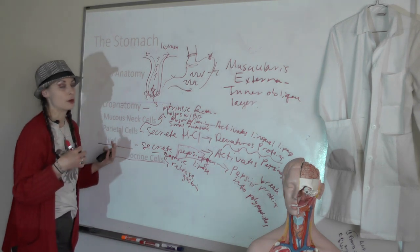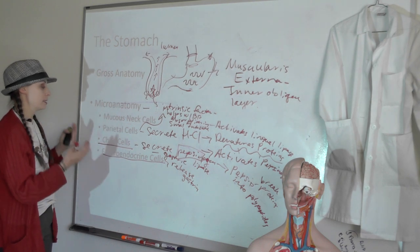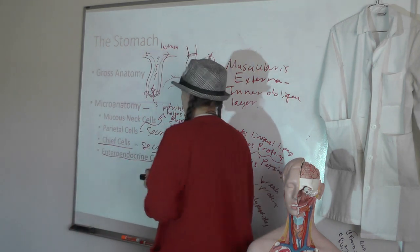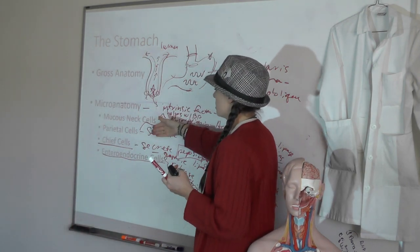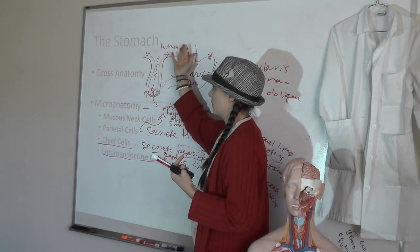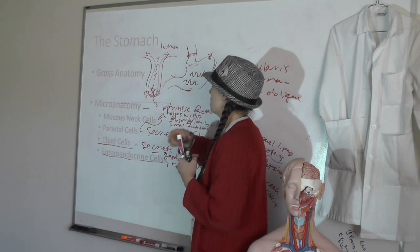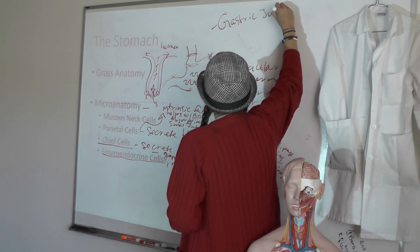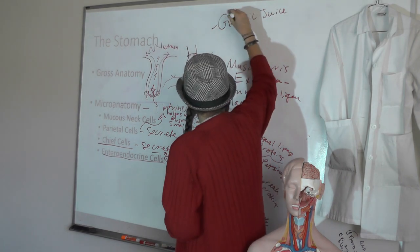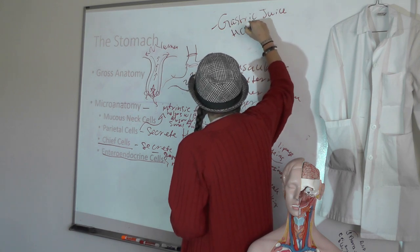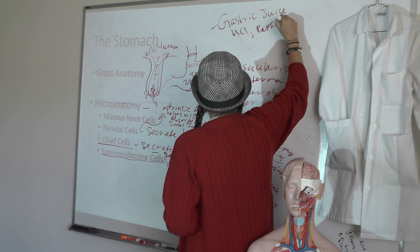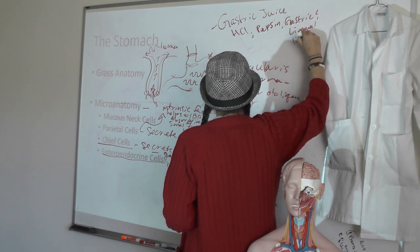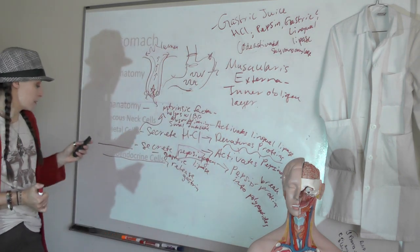Thinking about functional anatomy: here are the cells and here's what they're secreting. The function of cells in the gastric pits is to secrete mucus for the mucosal barrier. The function of cells in the gastric glands is to secrete gastric juice. Gastric juice contains hydrochloric acid, pepsin, gastric lipase, and lingual lipase which has been activated. That's the micro anatomy and the secretions.